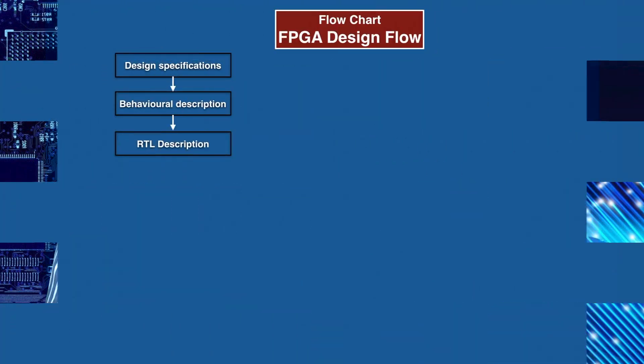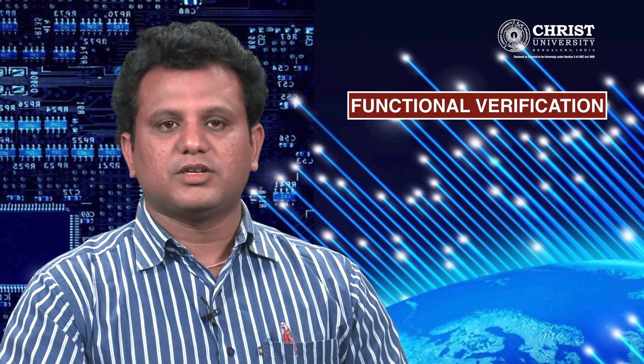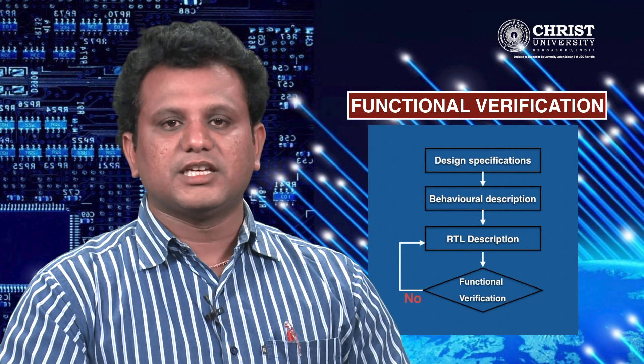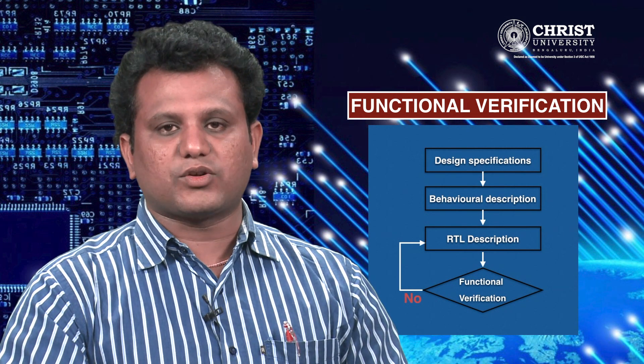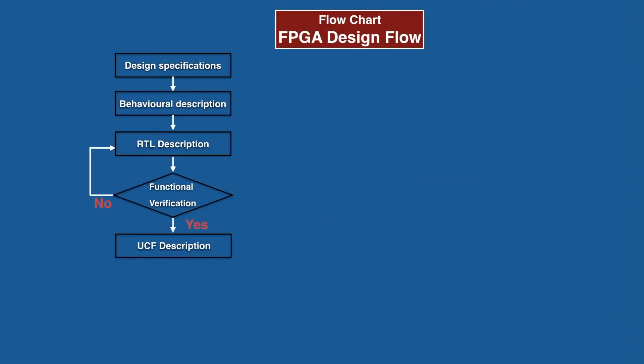The fourth stage in the flow chart of FPGA design flow is functional verification. In this stage, the functionality or behavior of a digital system described in RTL is verified by writing a test bench. The test bench holds various test vectors to verify behavior of a design. After behavior verification, the design is passed to the next stage if verification is successful; otherwise, the design is moved back to the RTL description stage to redesign the RTL code.